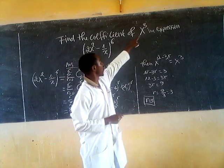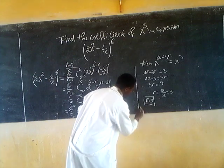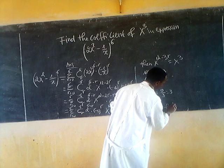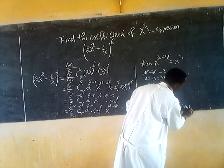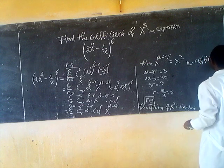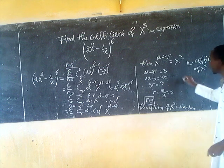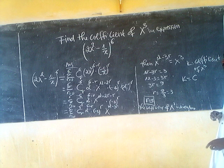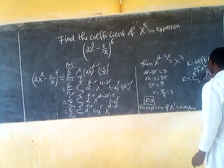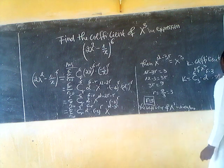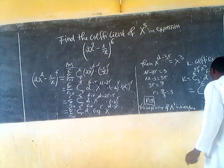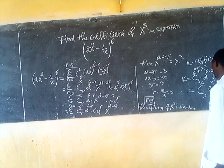To obtain the coefficient of x power 3, we substitute r equals 3 into the general term. The coefficient is: combination of 6 choose 3, times 2^(6 minus 3), times (-1)^3, which is combination of 6 choose 3, times 2 power 3, times (-1) power 3.